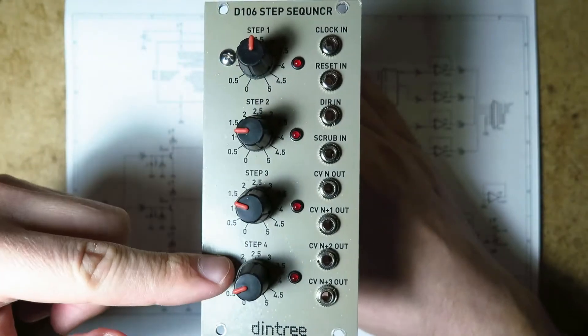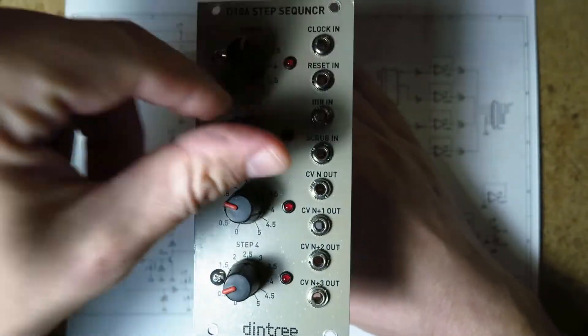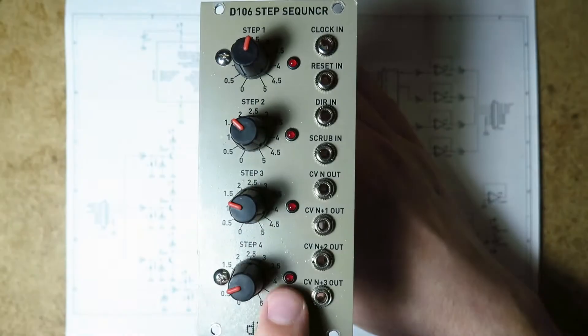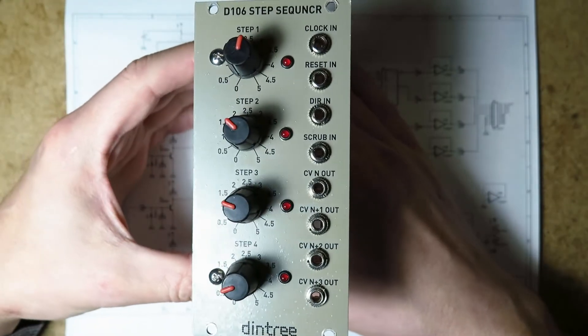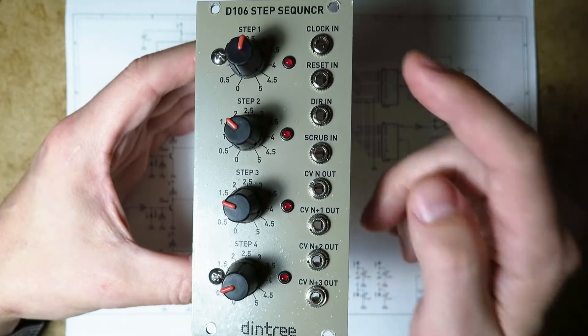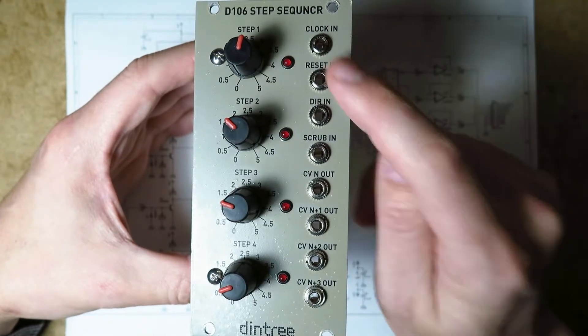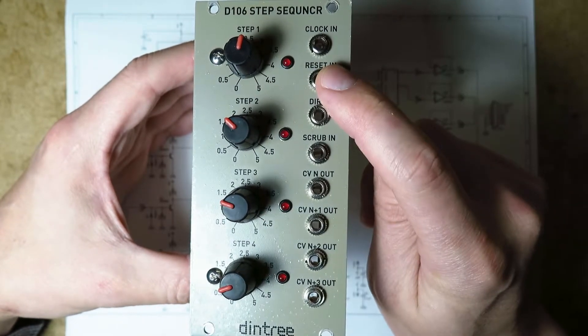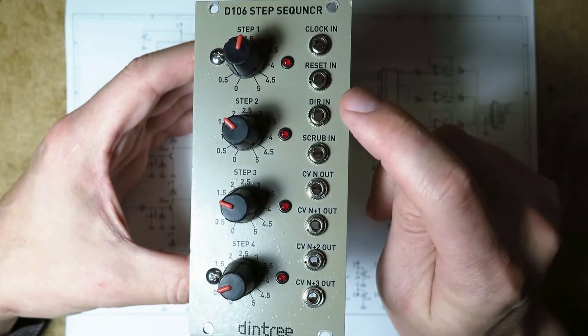So the sequencer is a four-stage sequencer. It has four pots like this, and an LED beside each pot to show which one is the active one. There's four inputs and four outputs. The inputs are clock in, that makes it move to the next step. Reset in, which causes it to reset back to the first step.